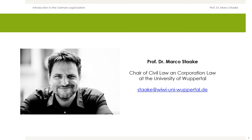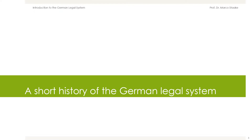In this first unit, I will give you, at first, a short history of the German legal system. Then we will take a look at the branches of law and jurisdiction, the hierarchies of norms, and the methods of interpretation.